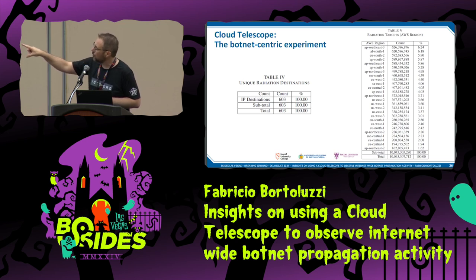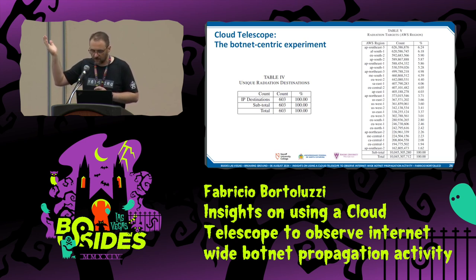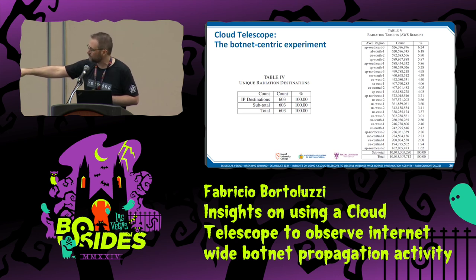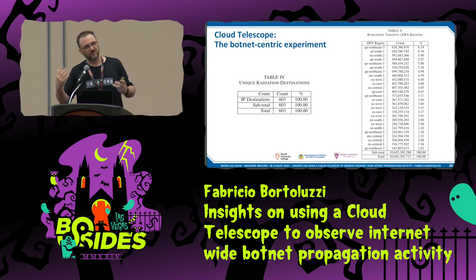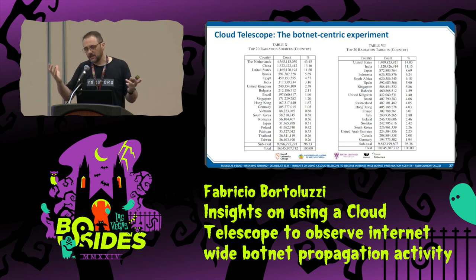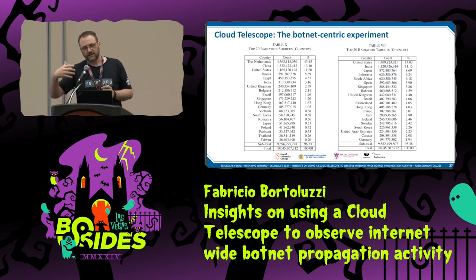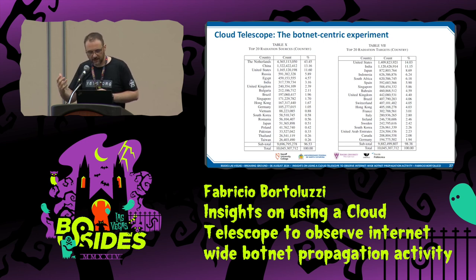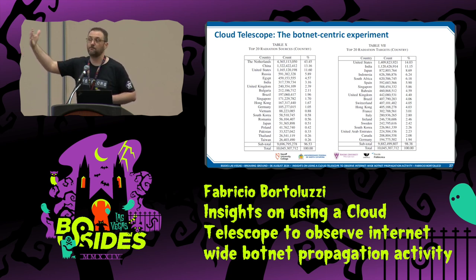Traffic distribution across the world was fairly even — the baseline is about 4% per region. Asia Pacific Southeast 3 saw 6% of the radiation, while Asia Pacific Southeast 2 saw only 1% — also the newest AWS region, which may explain this. The most attacking countries — not from an AWS perspective but by the country owning the source IP address — showed the Netherlands as the most prevalent country. Can you imagine the reason why the Netherlands appears as the most apparent source of these random attacks?